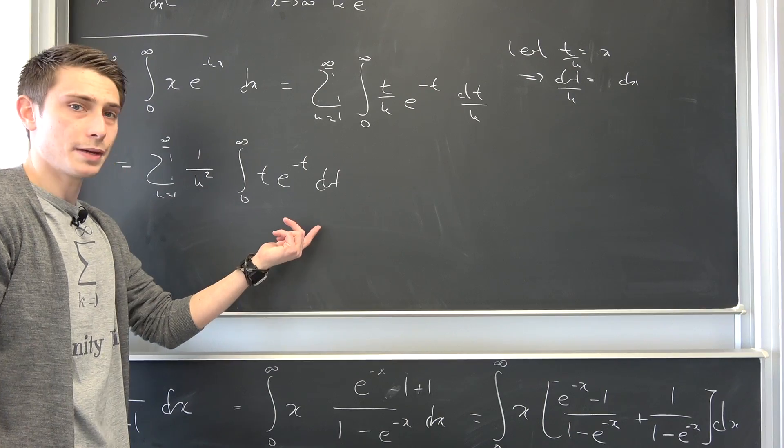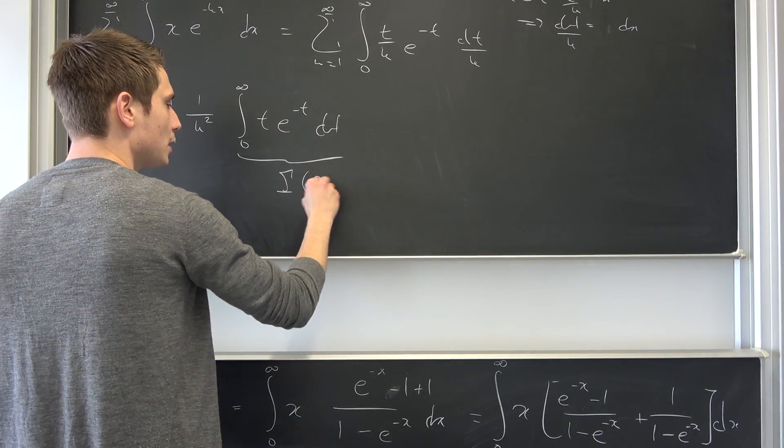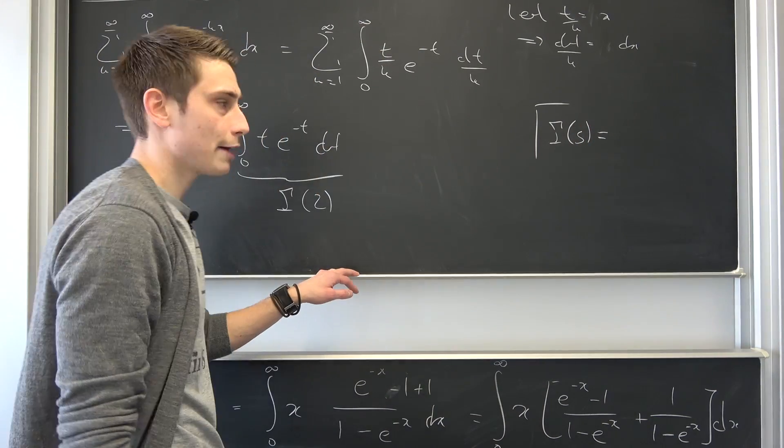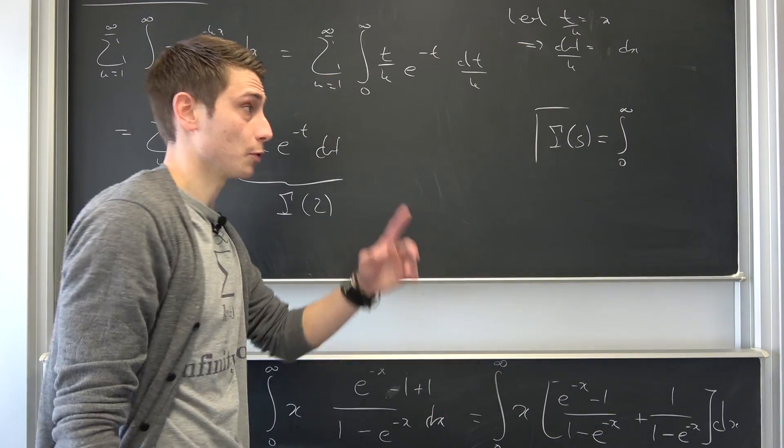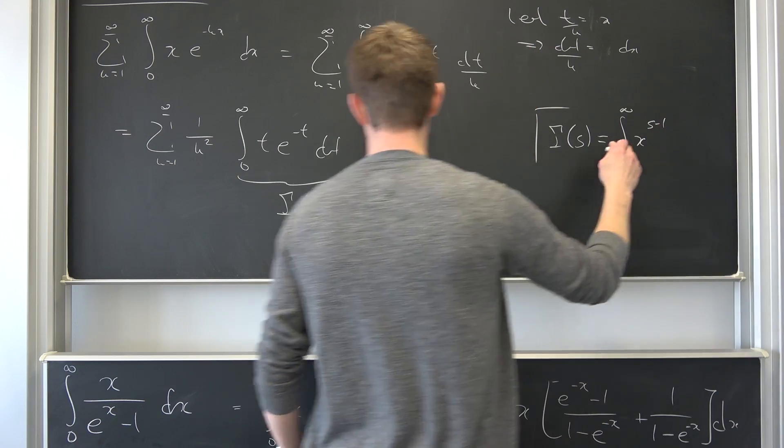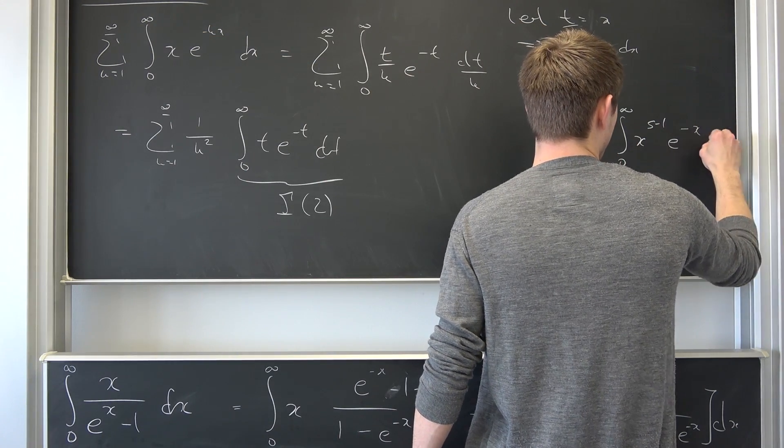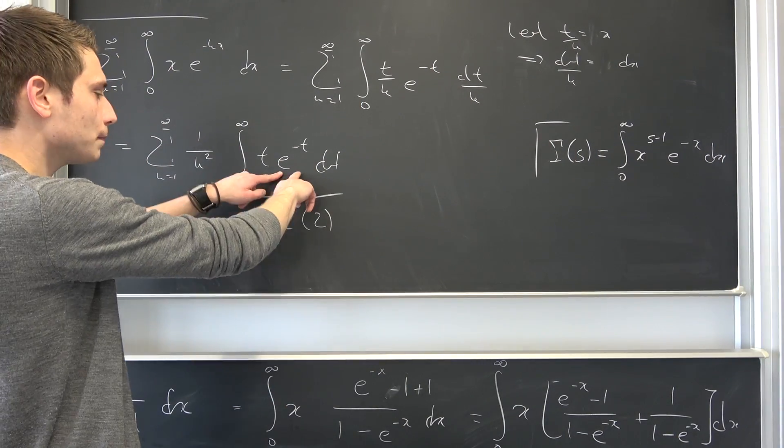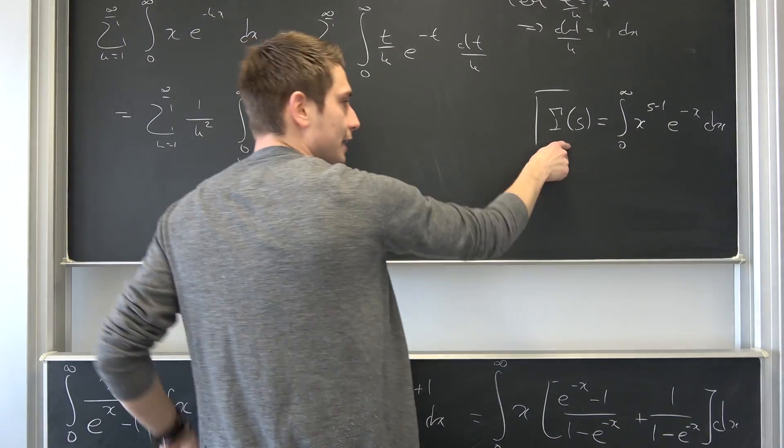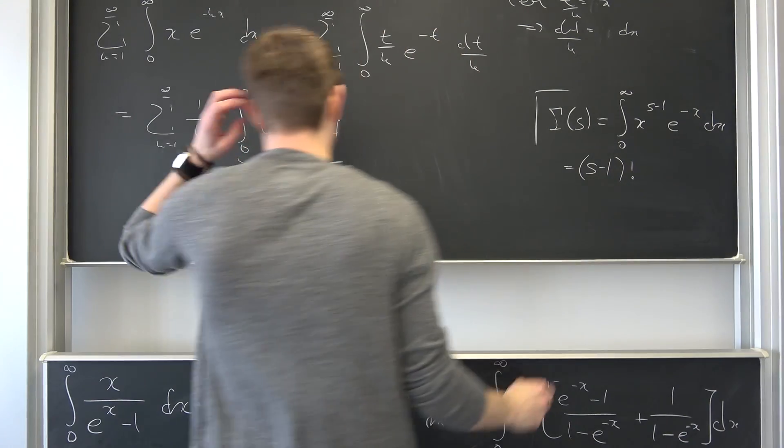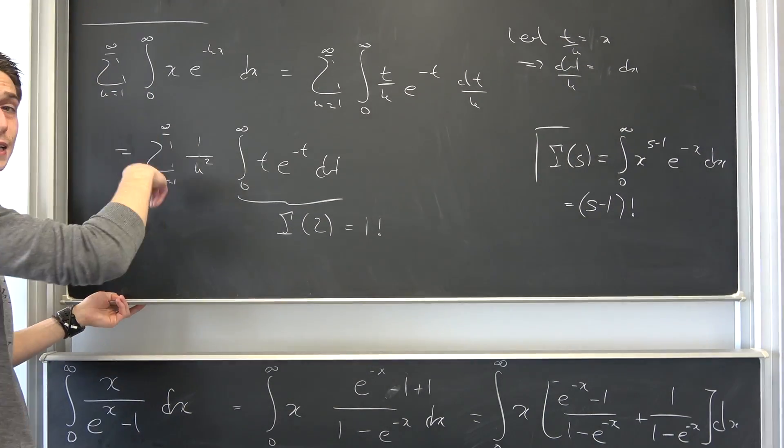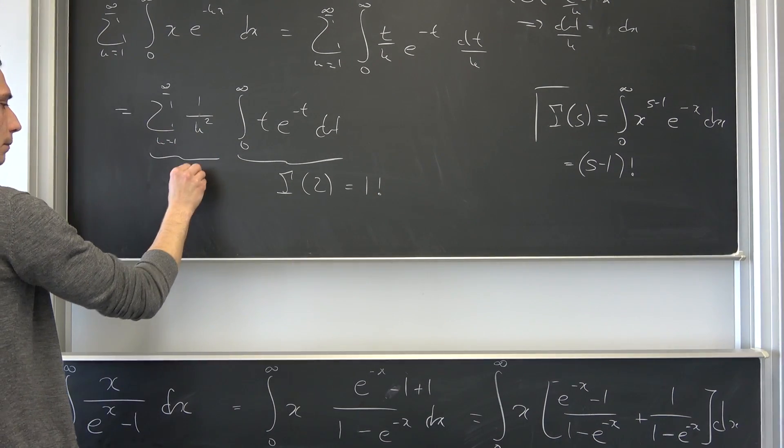You can use integration by parts, or you can make use of the fact that this right here is just gamma of 2. If we take a look at the gamma function, gamma of s, it's nothing but integral from 0 to infinity of x to the s minus 1 power times e to the negative x dx. So you see it's of that form, and if we plug s being equal to 2 into here, we actually end up with our t to the first power. So that's just gamma of 2. And by definition, gamma of s is nothing but s minus 1 factorial. So we are actually going to end up with 1 factorial. So this is 1 factorial, and this right here is our Basel problem, but it's also our zeta of 2.